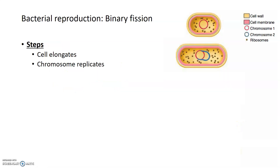Binary fission is a relatively simple process compared to mitosis in eukaryotic cells. The first part involves the cell elongating in shape — its cell wall and cell membrane both get larger to accommodate the two new identical daughter cells that will result. In addition to enough cell wall and membrane, the cell also needs enough DNA, so the linear chromosome of the parent cell, shown in red, replicates during the beginning of binary fission.